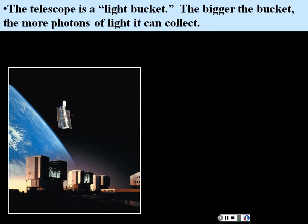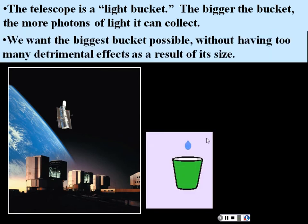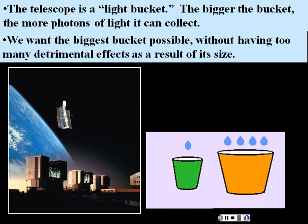We can think of the telescope as a light bucket. Here we have the Hubble Space Telescope and the Atacama Telescope in Chile. Their idea is to collect as much light as they can with the largest possible telescope without having detrimental effects due to the size. In the case of Hubble, it's not the largest telescope, but it's beyond Earth's atmosphere, so it can collect light without the detrimental effects of the atmosphere. There are other factors in determining how well a telescope performs based on its size.